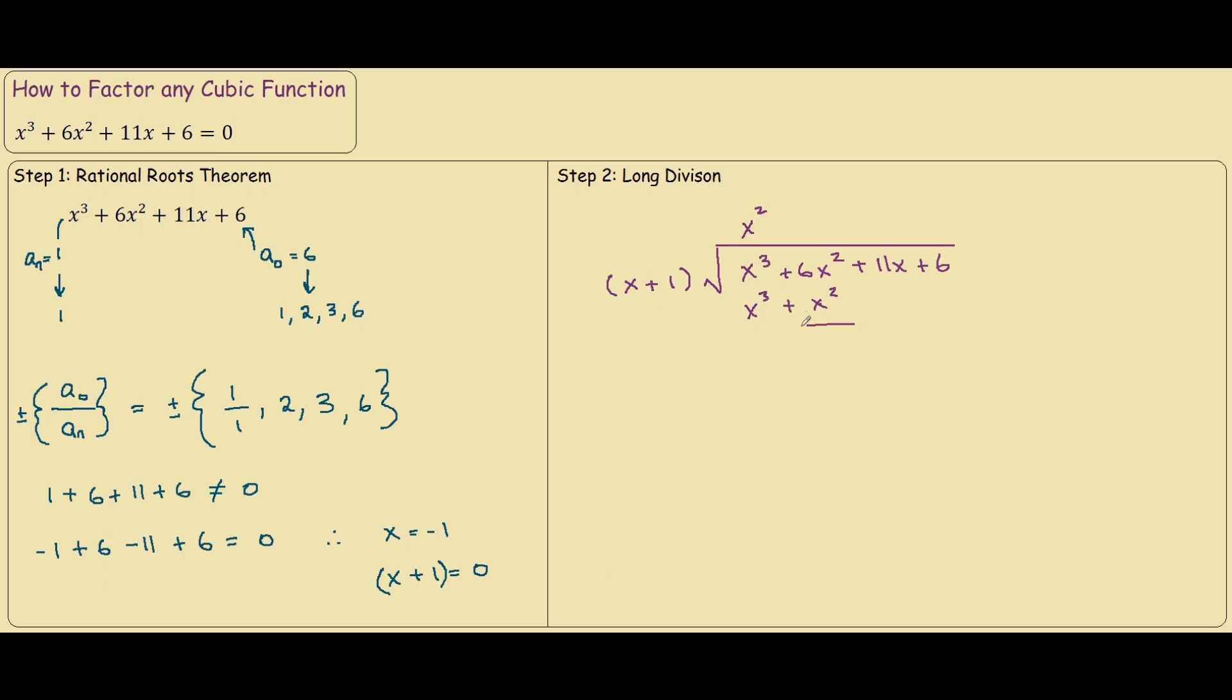And this will cancel nicely, if you do minus, so this will cancel, this will cancel. And we have 6x squared minus x squared is 5x squared.